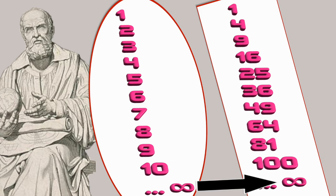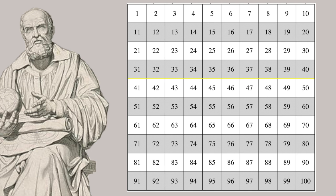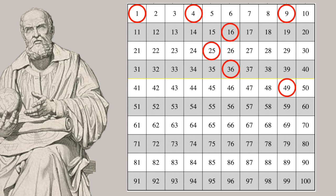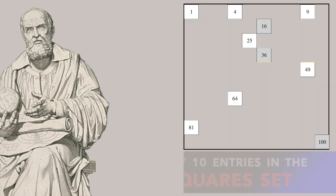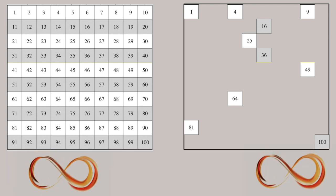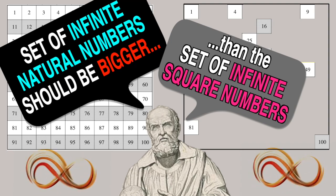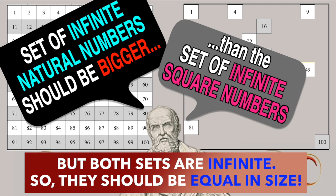Then Galileo reasoned: if you look at natural numbers from 1 to 100, you have 100 entries in that set. But in the set of squares of natural numbers, only 10 entries fall within 1 to 100: 1, 4, 9, 16, 25, 36, 49, 64, 81, and 100. So if you continue both to infinity, there should be more natural numbers than squares of natural numbers. But at the same time, both sets are infinite — you have an infinite number of natural numbers and an infinite number of their squares. This was deeply confusing to Galileo.